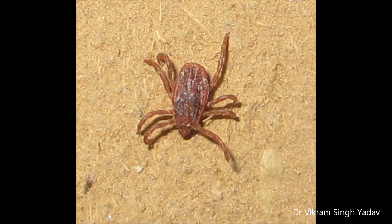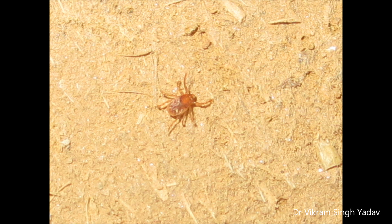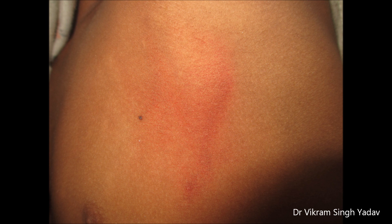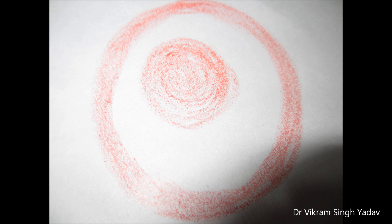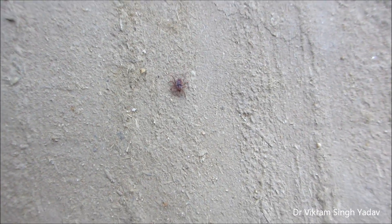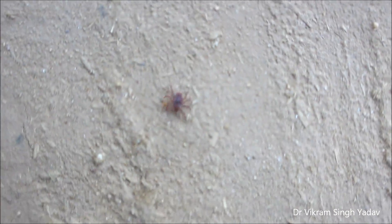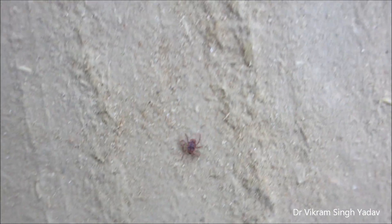In humans, ticks are found to cause Lyme's disease. Early symptoms include headache, fatigue, muscle soreness, and fever. At the site of the bite, a circular reddish region known as erythema migrans is found. It has a characteristic reddish outer circle with a normal skin color in between, giving a bull's-eye appearance — though this is not always present. This bite transmits Borrelia bacteria.